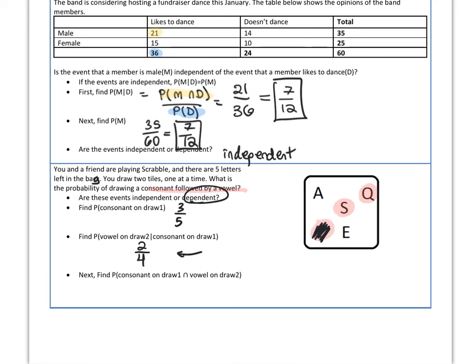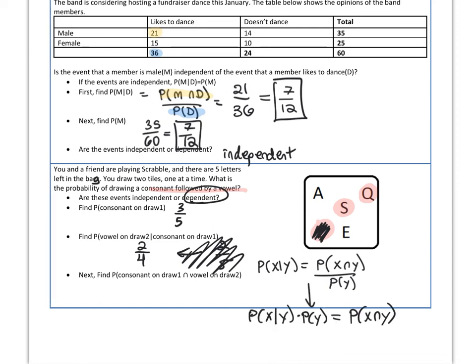If I hadn't taken out the consonant, this would have been two out of five, because there would have still been five letters in there. But it's not. Remember, the probability of X and Y equals the probability of X given Y multiplied by the probability of Y. So we multiply three fifths times two fourths, and that gives us the probability of getting a consonant followed by a vowel: three tenths. So the odds are three out of ten.